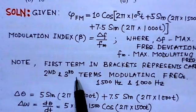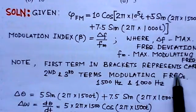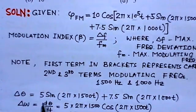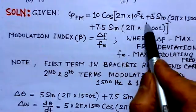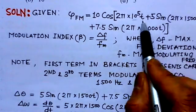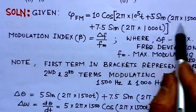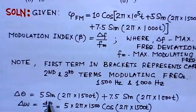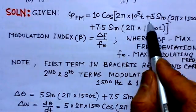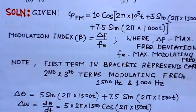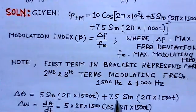The first term in the bracket represents the carrier, and the second and third terms are the modulation frequencies. These second and third terms represent the delta theta — the phase which can change. So delta θ = 5 sin(2π × 1500t) + 7.5 sin(2π × 1000t).